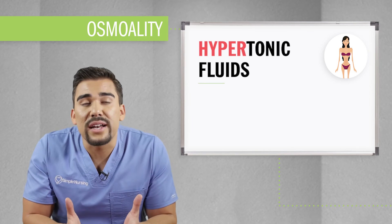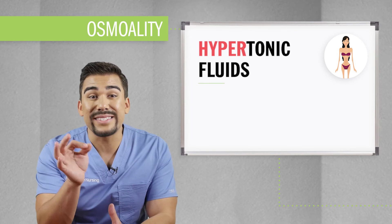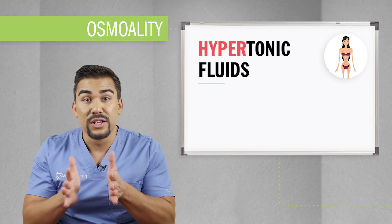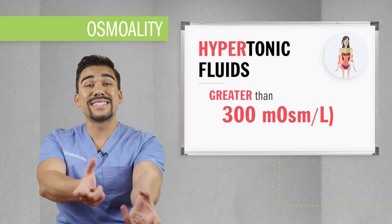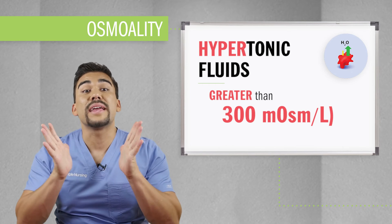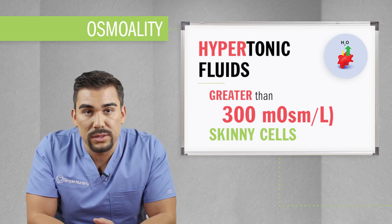Next we have hypertonic fluids — remember those skinny cells, skinny like a hyper person. These are fluids with osmolarities greater than 300. Basically, they suck the fluid out of the cell, making it super skinny in hypertonic solutions. The solution in hypertonic fluids has an osmotic pressure greater than the body, so the fluid from the body is being pulled out of the cell and into the vascular blood vessel spaces in order to dilute and equalize the osmotic pressure from this thick hypertonic fluid.